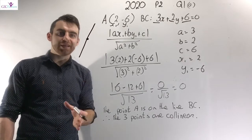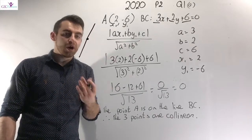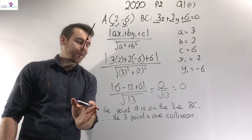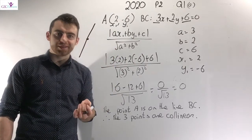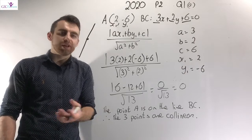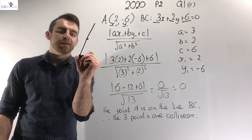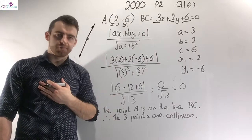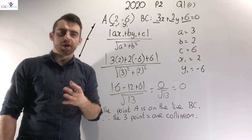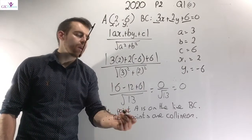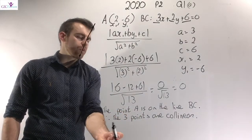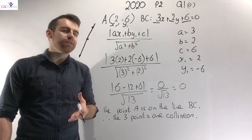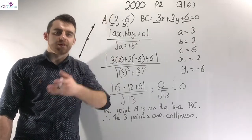A perpendicular distance of 0 means the point A must be on the line BC. The distance from A to the line is 0, so A lies on BC. We can now describe the relationship: all three points A, B and C are on the same line. The word we use to describe points that are all on the same line is collinear. So the three points are collinear — that's the relationship they're looking for. Collinear simply means they're all in a straight line.